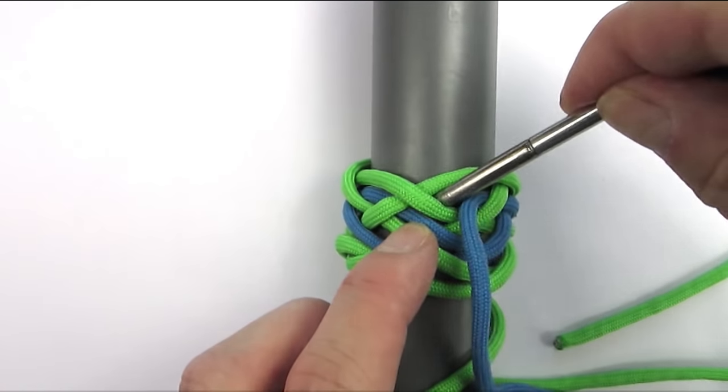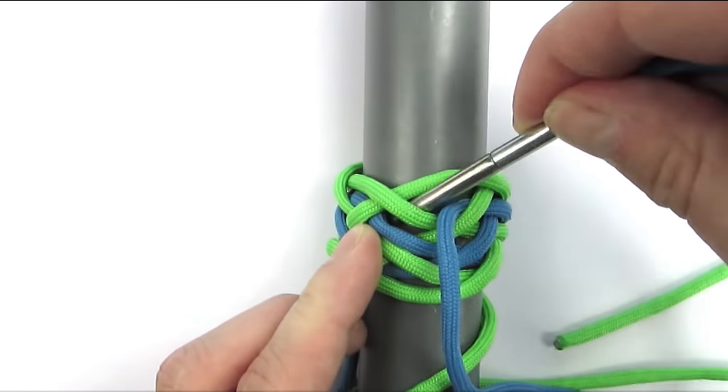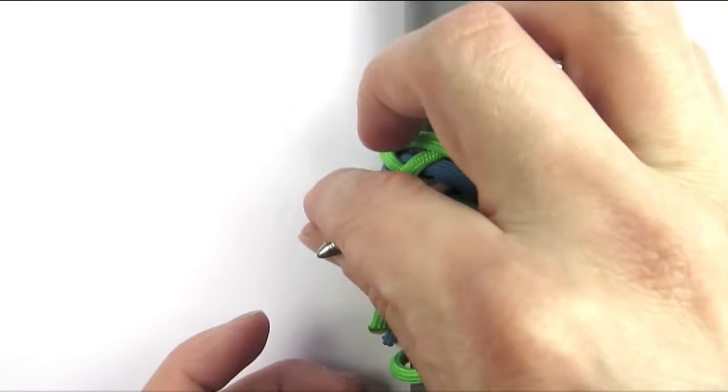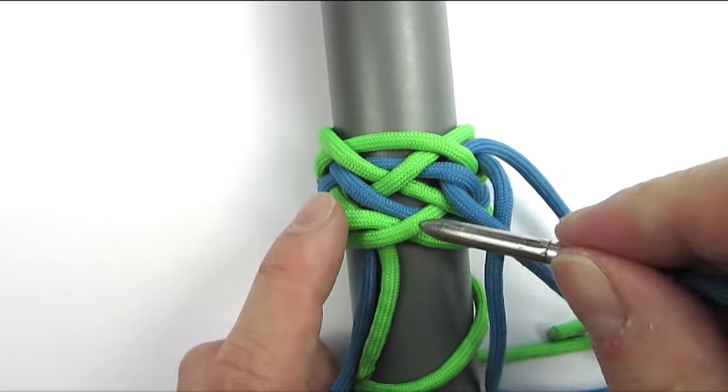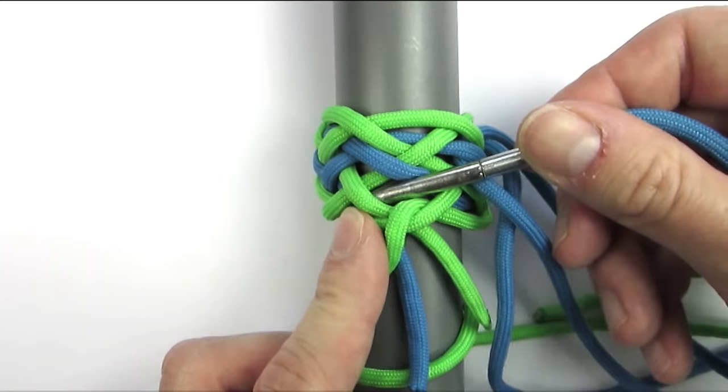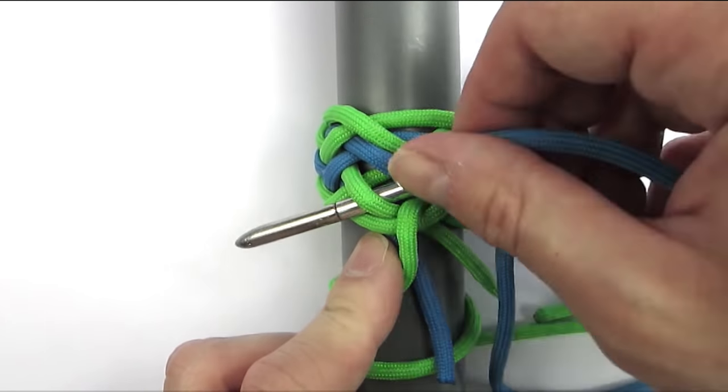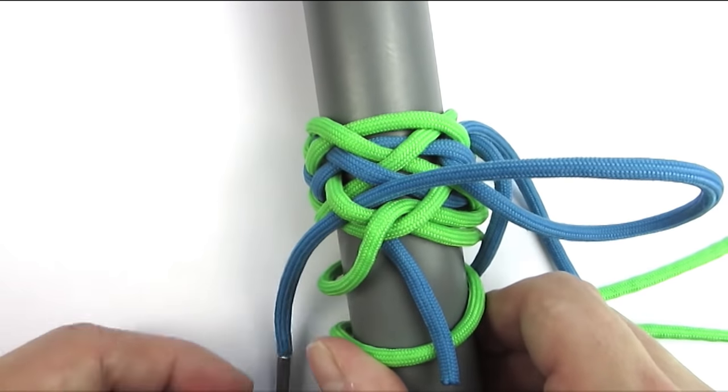Finally, we again go under 2, over 2, under 1, at which point we can exit the knot at the bottom.